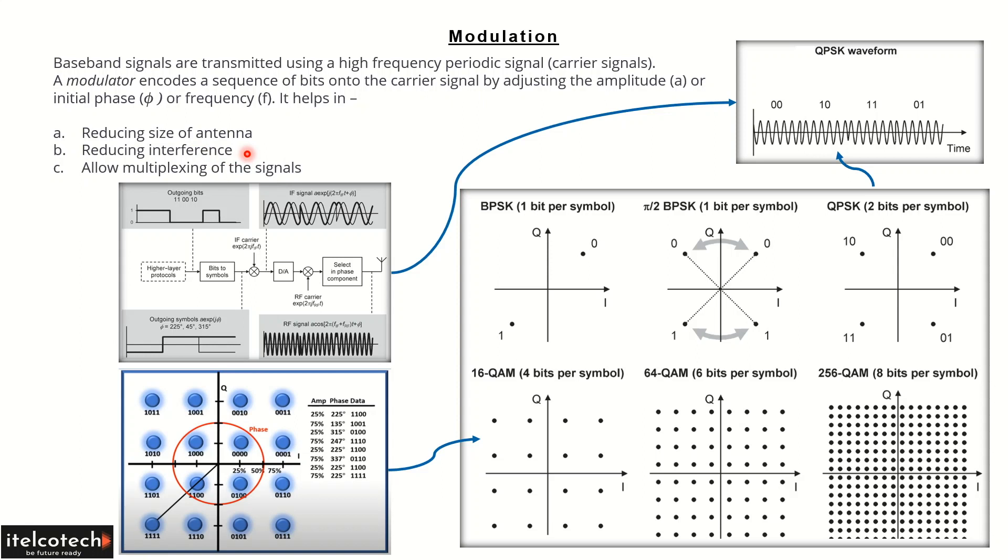Modulation also helps in reducing the interference. As we are modulating the signals in terms of amplitude or phase, there is less chance of interference in that case.